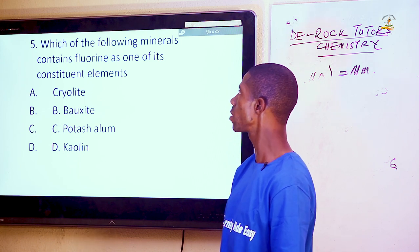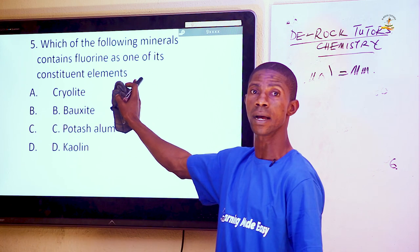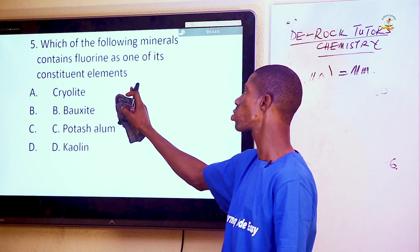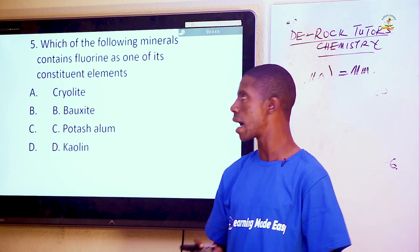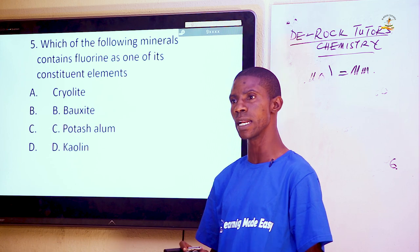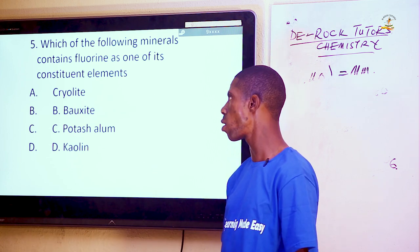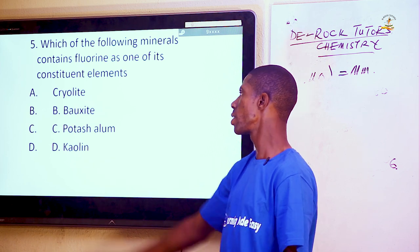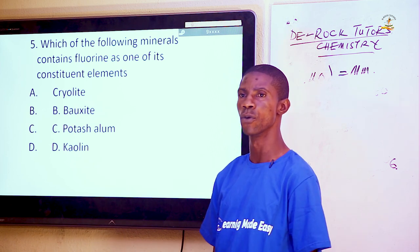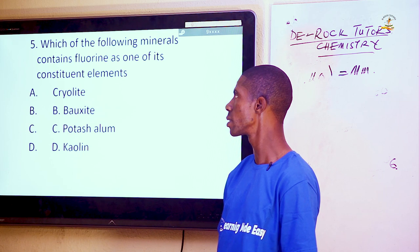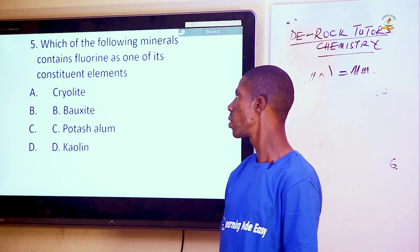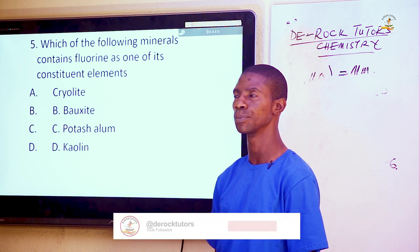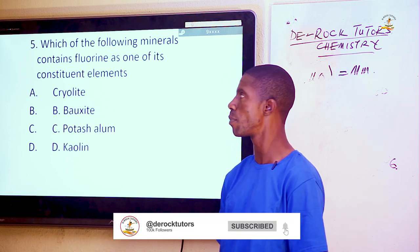Question 5: Which of the following minerals contains fluorine as one of its constituent elements? Fluorine belongs to Group 7, generally called halogens. Kaolin actually contains fluorine as one of its constituents. It is not found in cryolite, bauxite, or potassium alum.